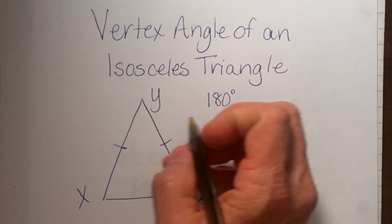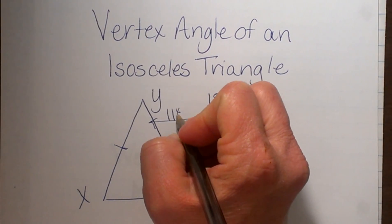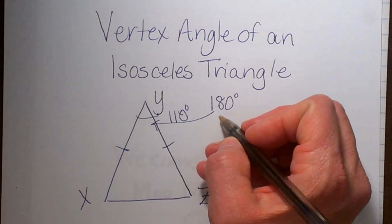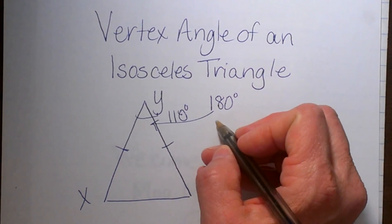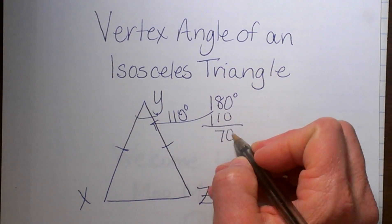So let's look at that. Let's say that angle y is 110 degrees. If angle y is 110, that means I have 110 from 180. That is 70 degrees left over.